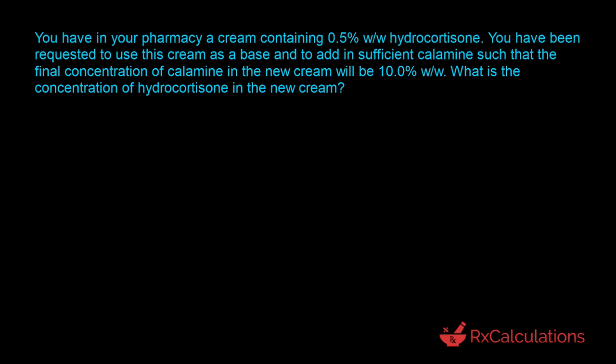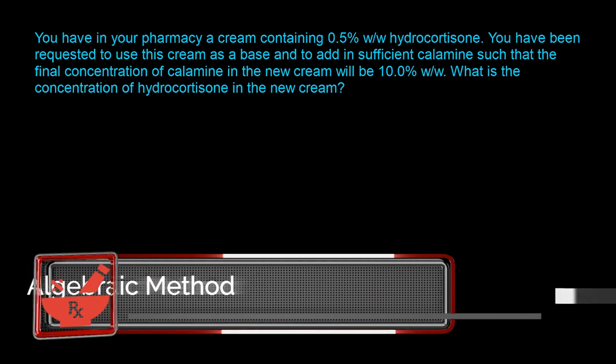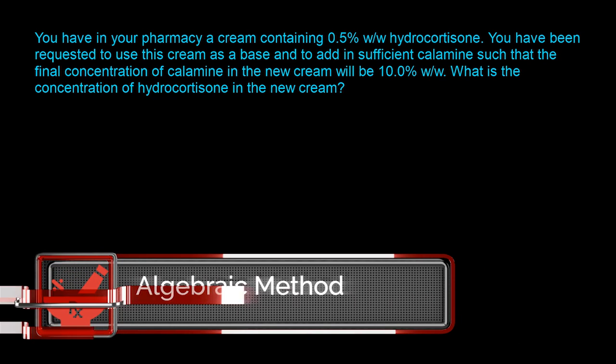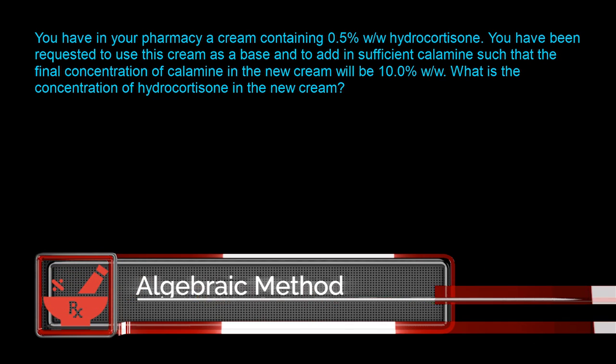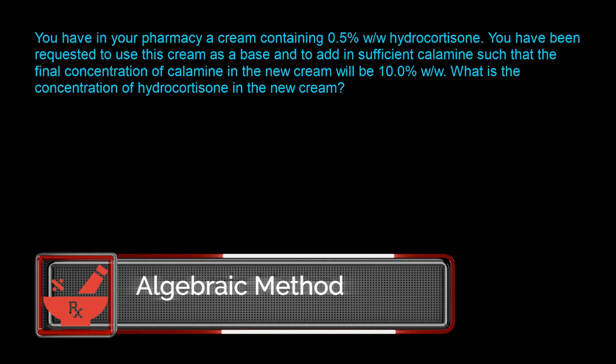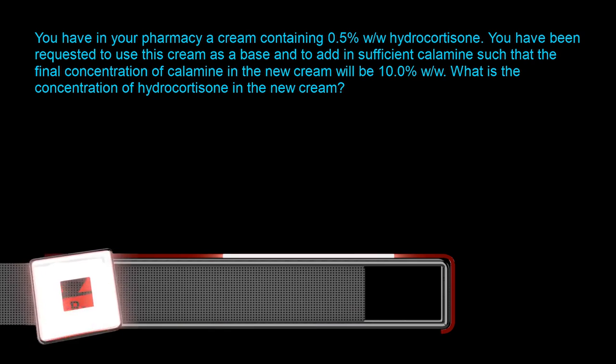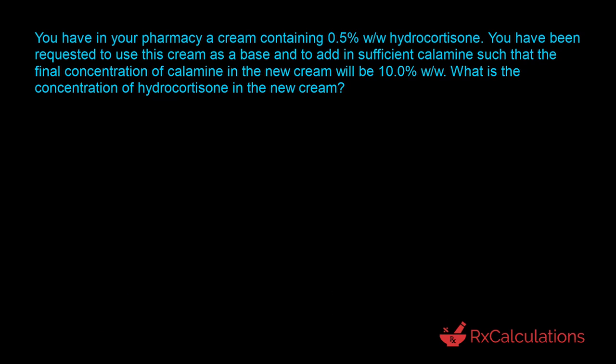This being a dilution calculations question, there are typically two ways you can solve it. I'm going to show you how to use both approaches and then you have the flexibility of deciding which you prefer. The first approach is the algebraic method, which involves using a simplified version of the generalized algebraic equation depending on the number of components you're mixing. But before we get to the equation, let's do a quick analysis of what the question is asking.